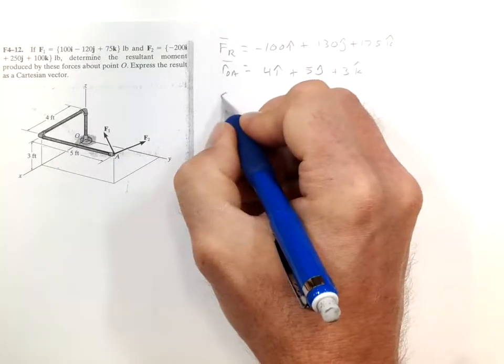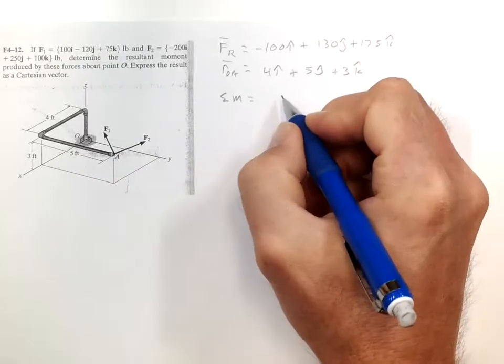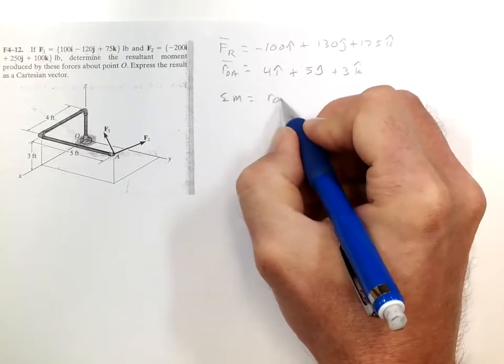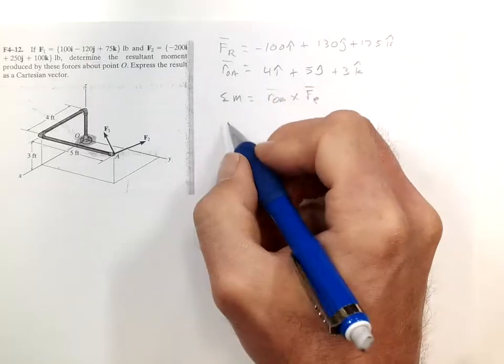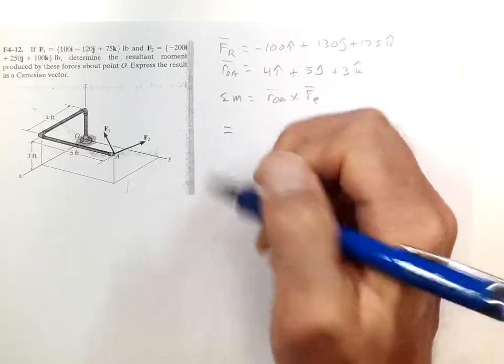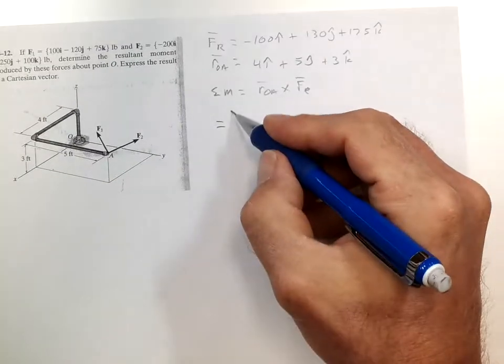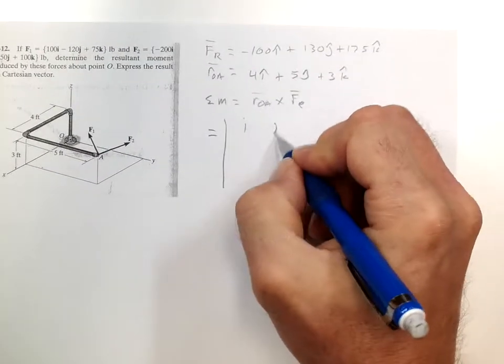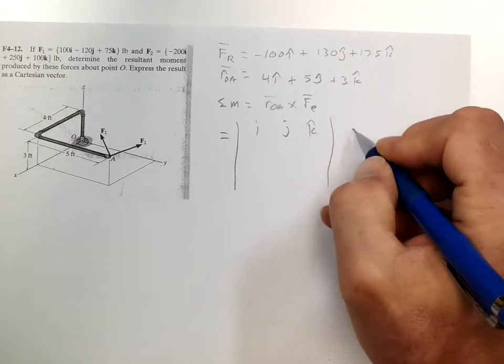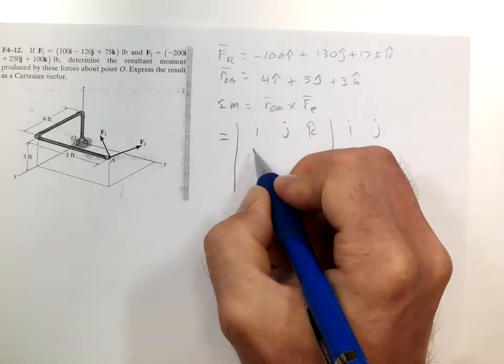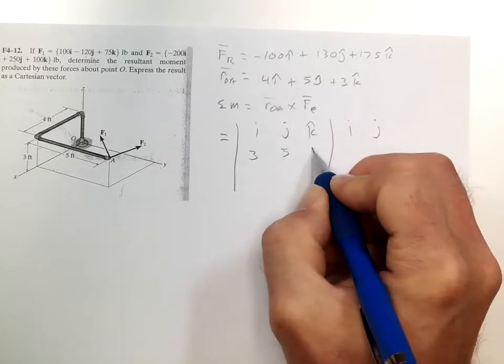So the sum of the moments equals ROA cross FR. So that equals the cross product: i, j, k in the first row, then 4, 5, 3 in the second row.